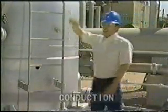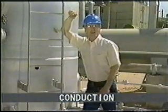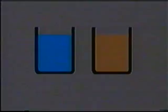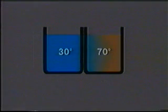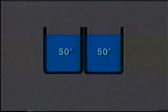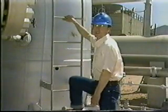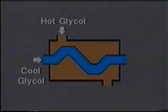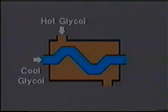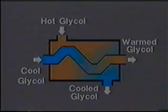In physics, conduction is the process by which heat travels through a substance. If two containers of water — one containing cold water, the other hot — are placed together, the temperature of the hot water will fall faster than if it were not in contact with the cold water. In glycol dehydration, we use the same theory of conduction. By bringing together cool and hot glycol in heat exchangers, the process of heat transfer through conduction is accomplished, allowing us to control the temperature of the dehydration process.